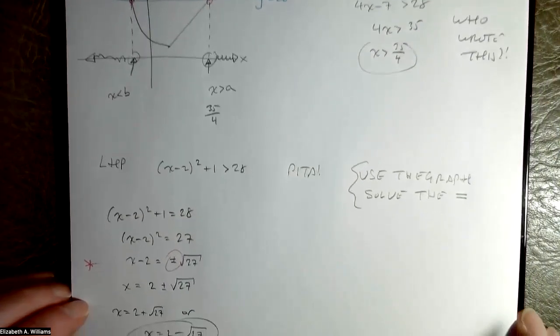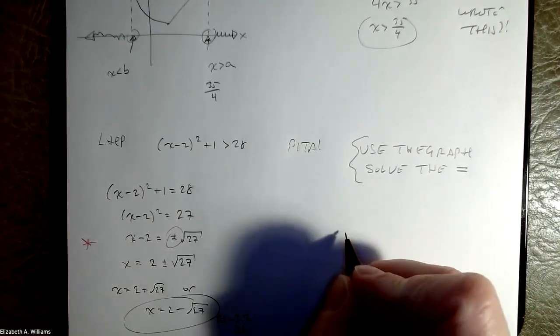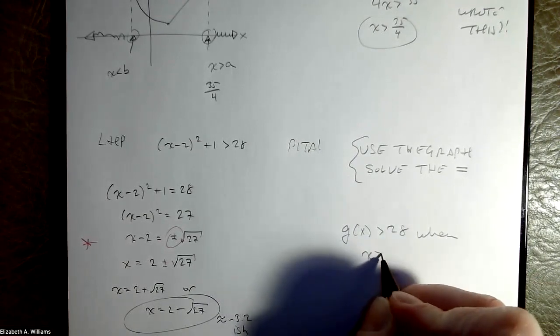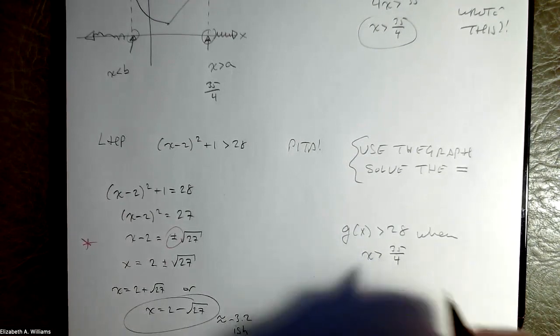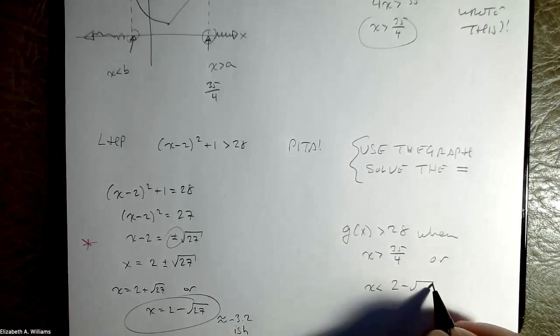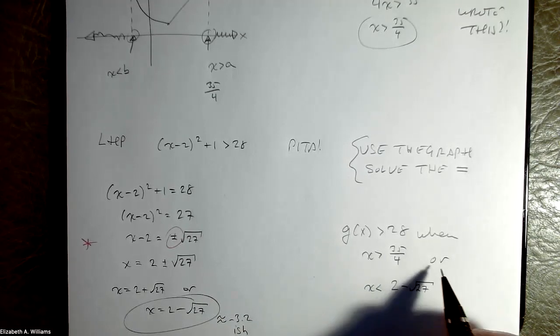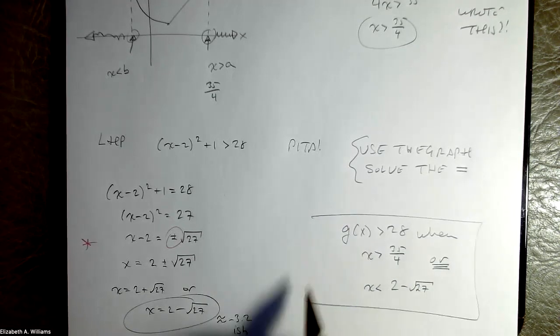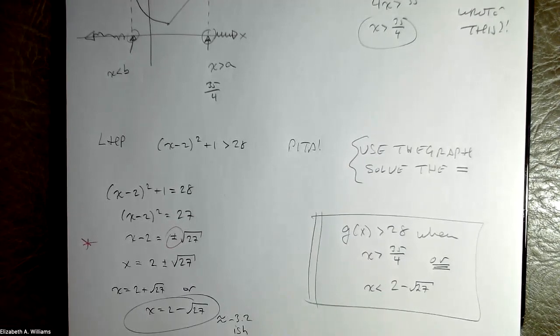So my grand overall result is g of x is greater than 28 when x is greater than 35 fourths, or when x is less than 2 minus root 27. You have to say or because you can't be both things at the same time. And there's your solution. That was fun. Okay. I hope that helped. I really hope that was useful to you.